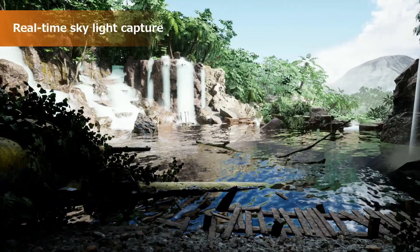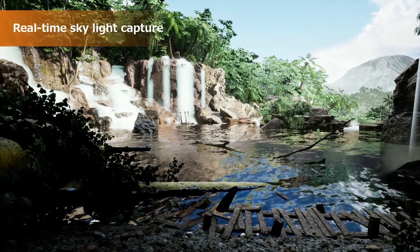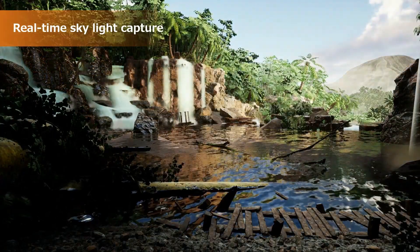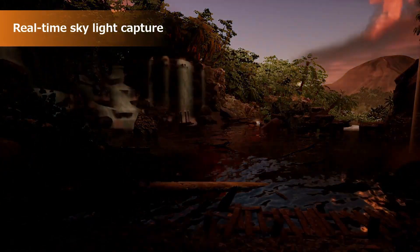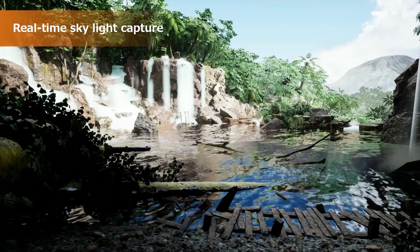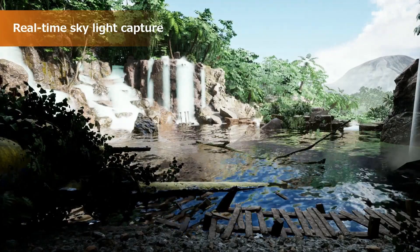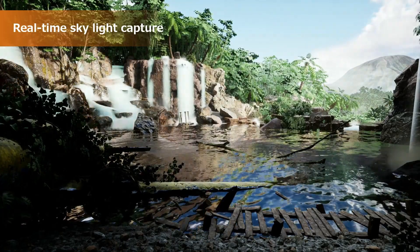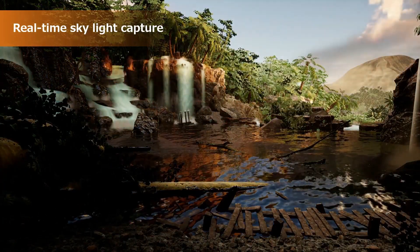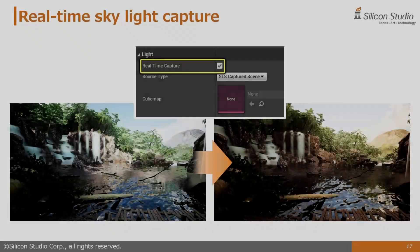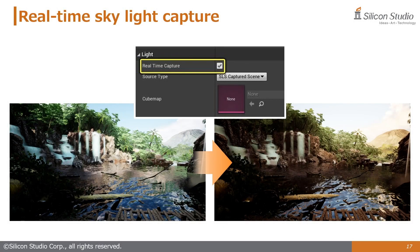Here is a video clip that showcases the real-time skylight capture, which was introduced in UE 4.26 and which Enlighten has added support for. With the ability to properly capture the dynamic and specular environment lighting provided by Unreal, it is now easier to achieve accurate changes in time that affect lighting. You can observe that the dynamically changing skylight is accurately reflected in the indirect light during each time period. To use this feature, you simply need to enable the option on the Unreal side.